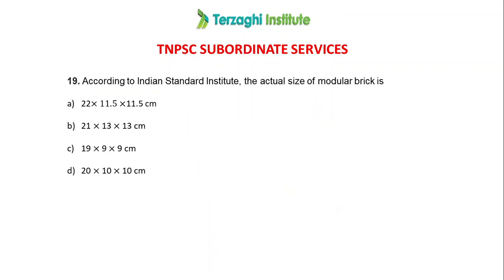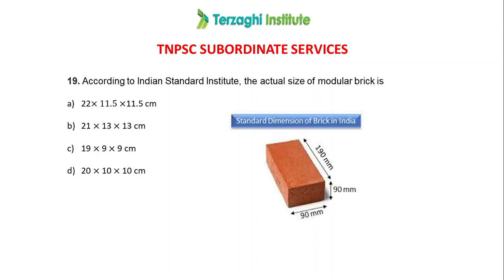According to Indian Standard specifications, the actual size of a standard mortar brick is Option C — 19 by 9 by 9 cm. This is the standard brick size in India.